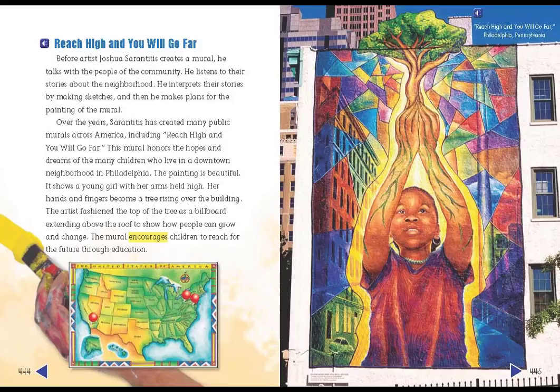This mural honors the hopes and dreams of the many children who live in a downtown neighborhood in Philadelphia. The painting is beautiful. It shows a young girl with her arms held high. Her hands and fingers become a tree, rising over the building. The artist fashioned the top of the tree as a billboard, extending above the roof, to show how people can grow and change. The mural encourages children to reach for the future through education.